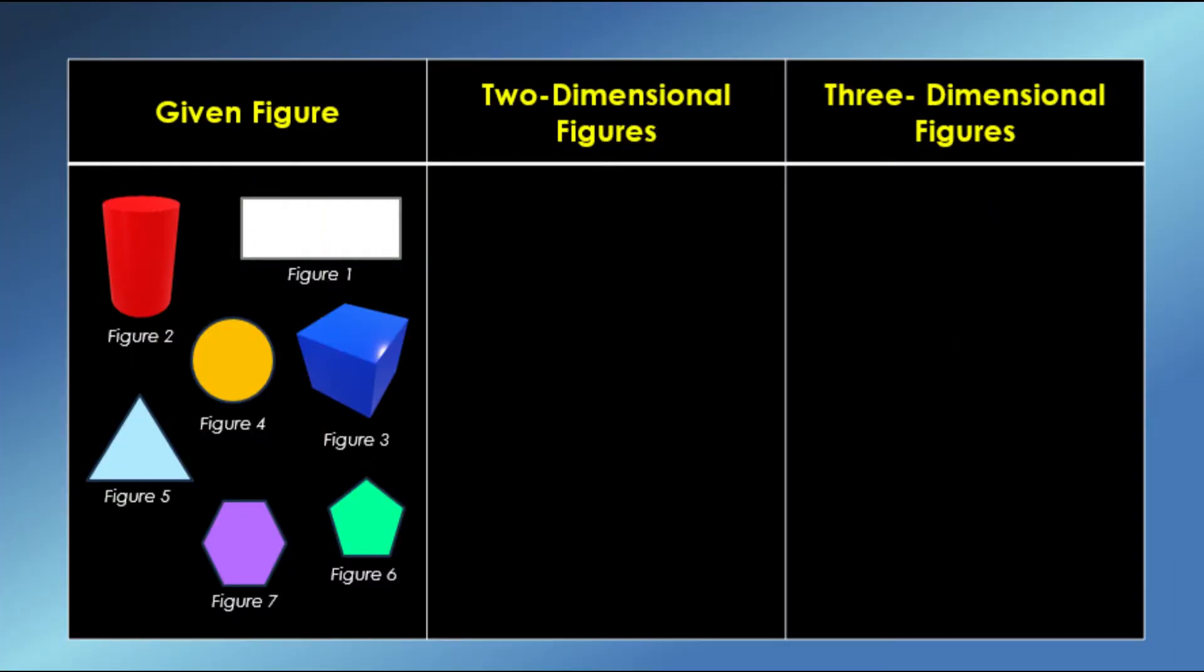We have here a table. In the first column are the given figures. We will sort these into corresponding different types of objects. The second column is for the two-dimensional figures or 2D shapes.